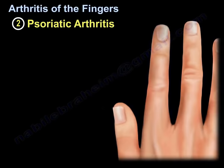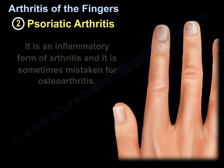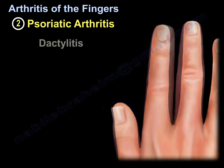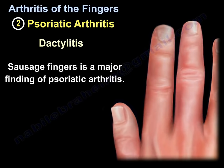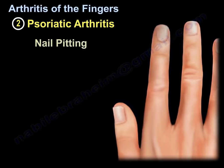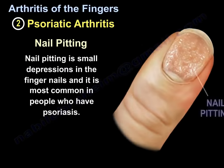The second type is psoriatic arthritis. It is an inflammatory form of arthritis that sometimes may be mistaken for osteoarthritis. Psoriatic arthritis will include dactylitis, referred to as a sausage digit — inflammation of the entire digit. The sausage finger is a major finding of psoriatic arthritis. Nail pitting — small depressions in the fingernails — is most common in people who have psoriasis.